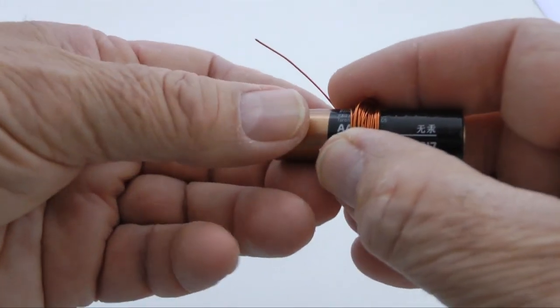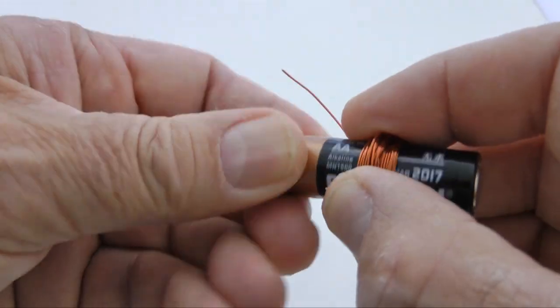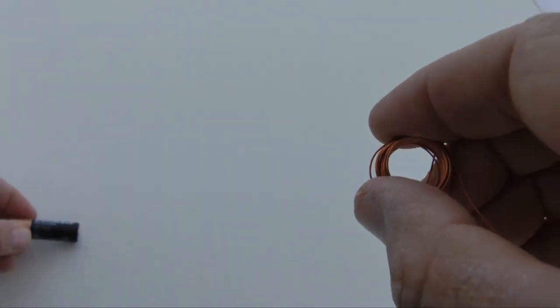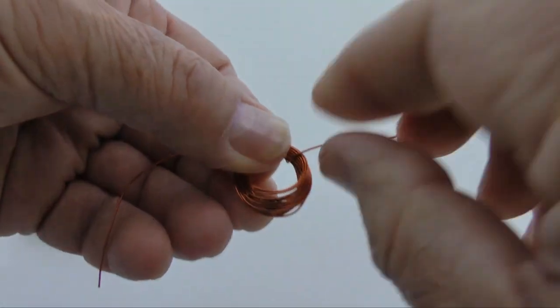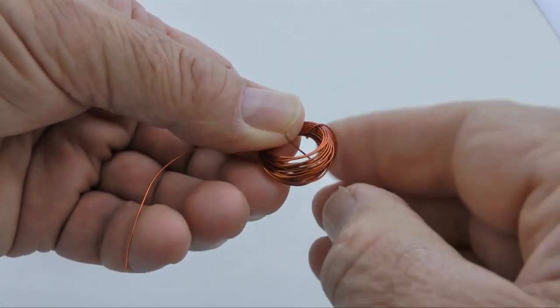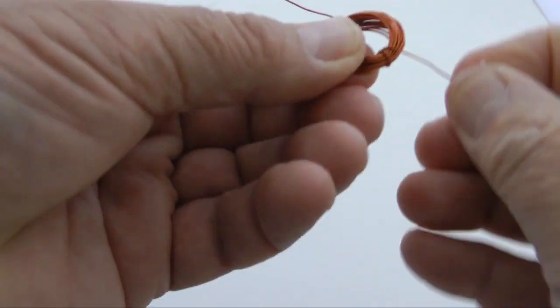Carefully slide the coil off of the battery. Loop the two ends around the coil two or three times. Note that these securing loops are tied directly across the coil from one another.